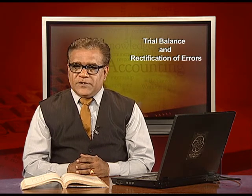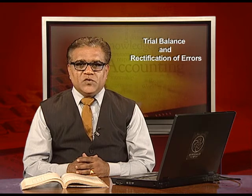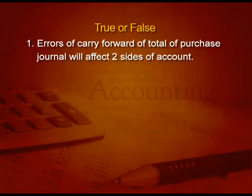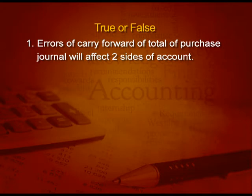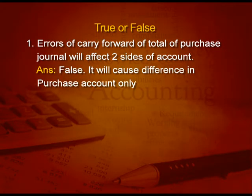Let us do some true and false questions with reasoning. First: error of carry forward of the total of the purchase journal will affect two sides of the account. Answer is false. It will cause a difference only in the purchase account. Because we are just doing the total part wrong of one book, so it is a one-sided error, not two sides.